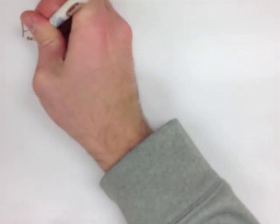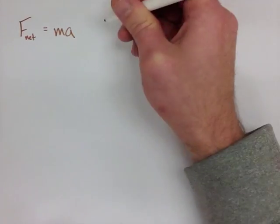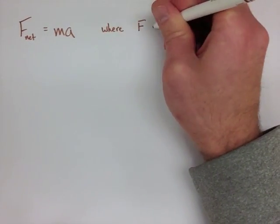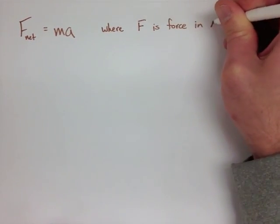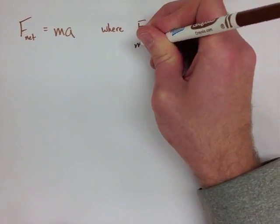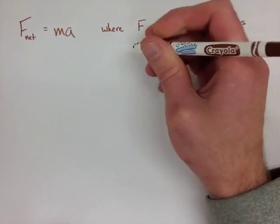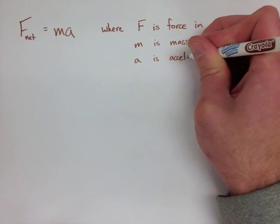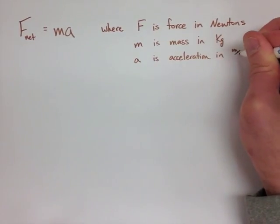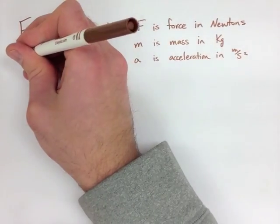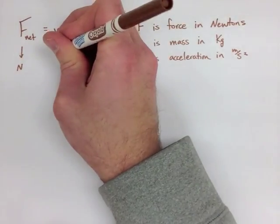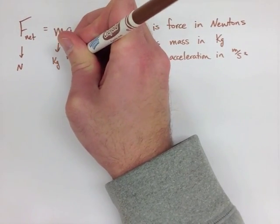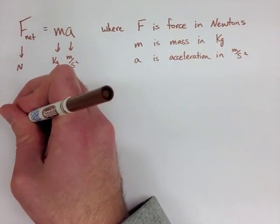Let's look at that equation, what it means, and a simple example on how to use it. We have force net equals mass times acceleration, where force is in newtons, mass is in kilograms, and acceleration is in meters per second squared. Remember a newton is actually equal to a kilogram meter per second squared, so this makes sense.